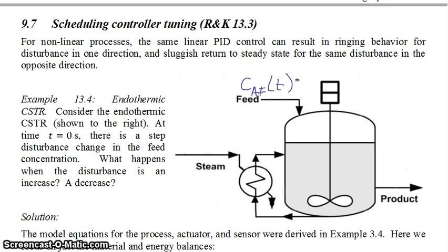It's a step disturbance change. We're going to look at the scenario where in one case your feed concentration jumps up and in another case it jumps down. What happens when this disturbance variable increases versus decreases.